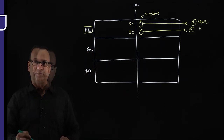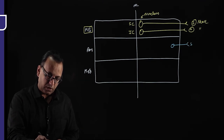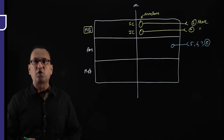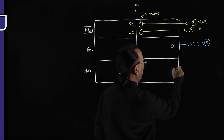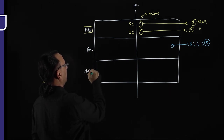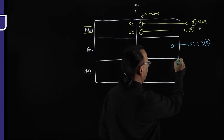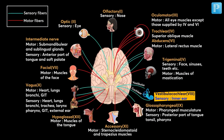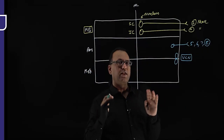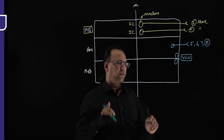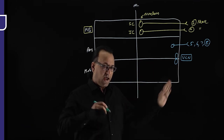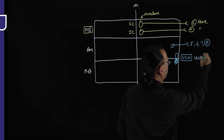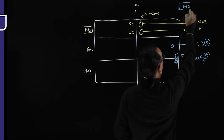Nuclei for cranial nerves 5, 6, 7, and 8 are generally found in the pons. However, some nuclei overlap: the vestibulocochlear nuclei for nerve 8 have neuron bodies partly in the pons and partly extending into the medulla oblongata, so they are at the pontomedullary junction. These vestibulocochlear nuclei handle hearing and balance. In lateral medullary ischemia — Wallenberg syndrome — compromised vestibular nuclei cause vertigo.